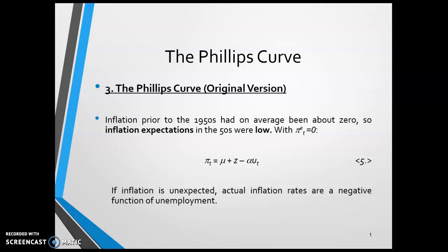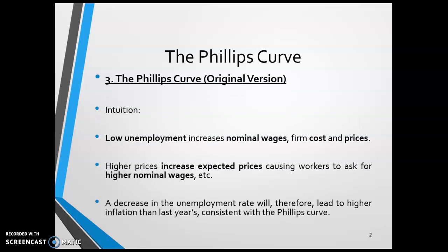If the unemployment rate is low, bargaining power is high, wages will go up, inflation will be higher, and vice versa. That's really the main intuition here. It follows from aggregate supply: low unemployment increases bargaining power that drives nominal wages up.